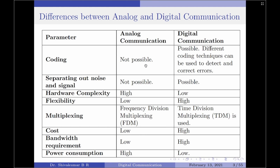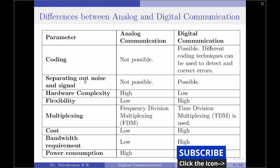In digital communication, coding is possible — different coding techniques can be used to detect as well as correct errors. The next parameter we will consider is separating out noise and signal after transmission.